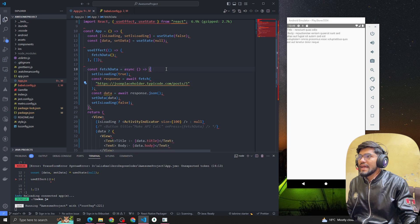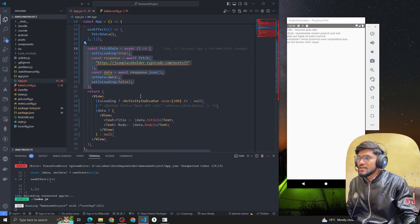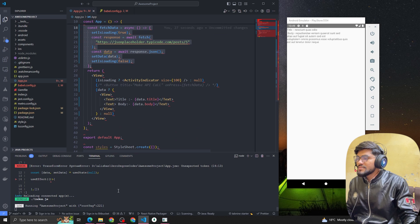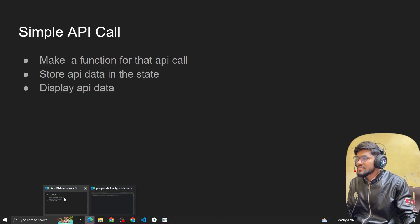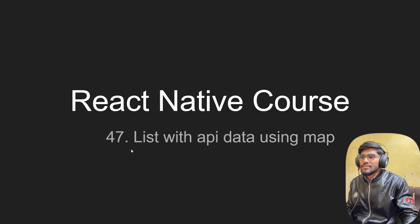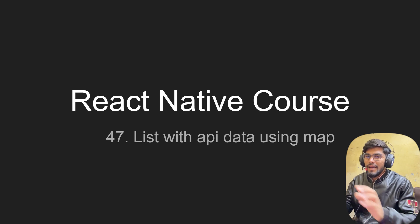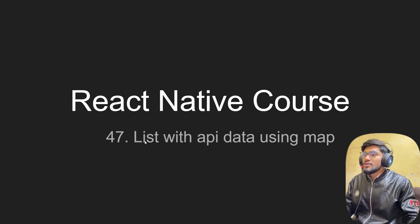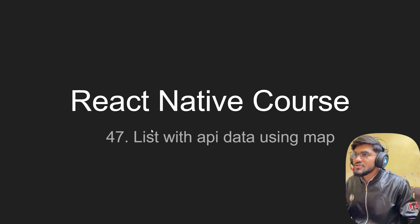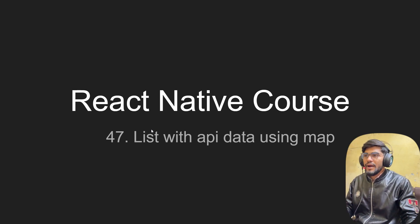That's all for this video. In the next video we are going to talk about displaying a list with API data using the map function — we'll make an API call to get all items and map the data using the map function. See you guys in the next video, thank you, bye!